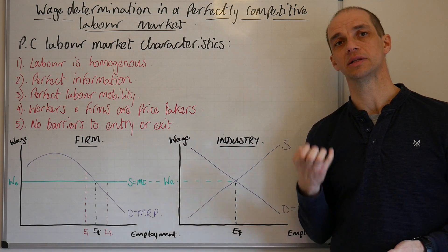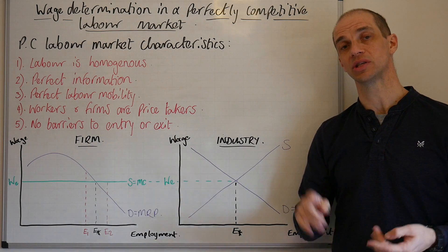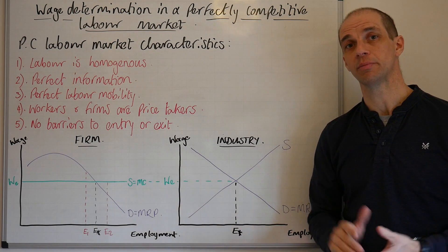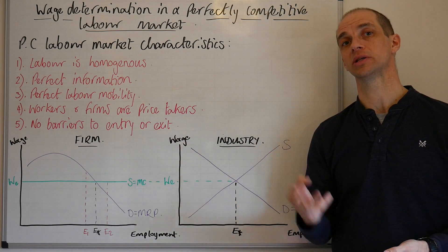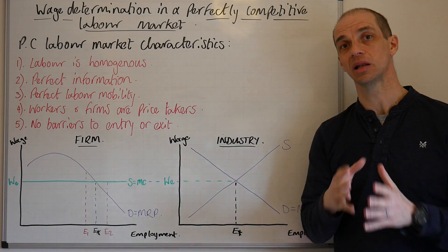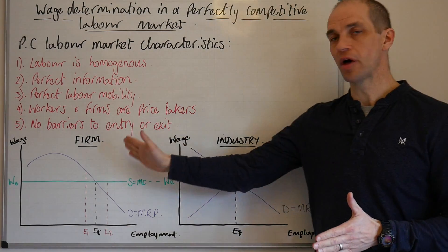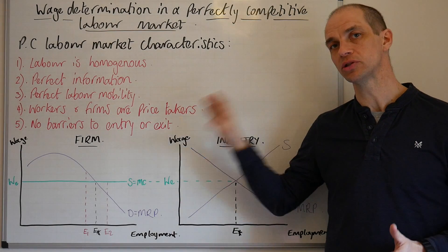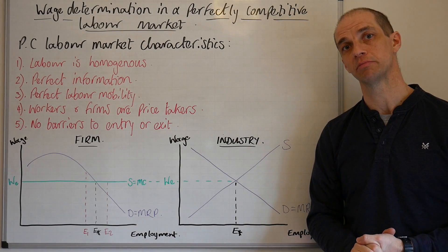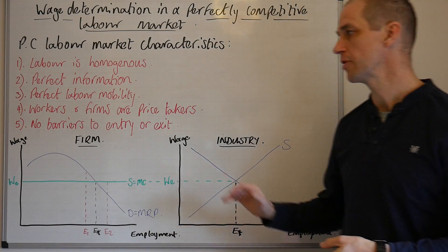We could also add in here that we assume that both parties — both economic agents, firms and employees — will also be rational profit maximisers, trying to maximise the wage that they receive as an employee, or trying to maximise the utility from that employee as the firm. So with actually illustrating this, we've got to remember the distinction between the firm and the industry in a perfectly competitive labour market, just as we've done previously in theory at the firm and business economics.